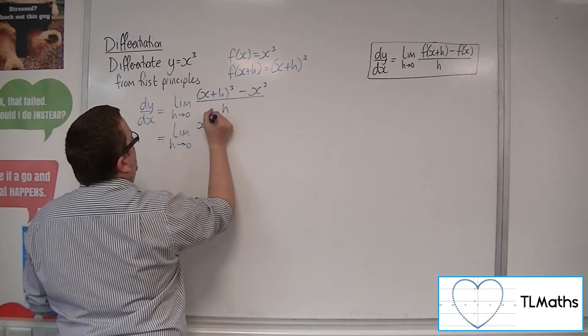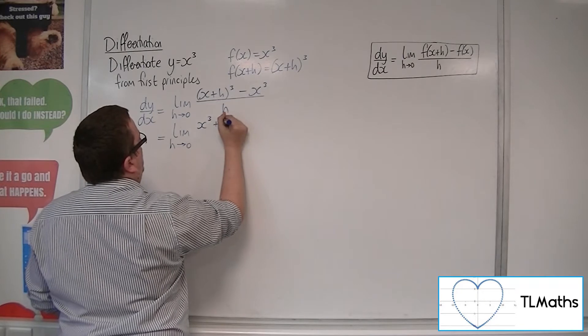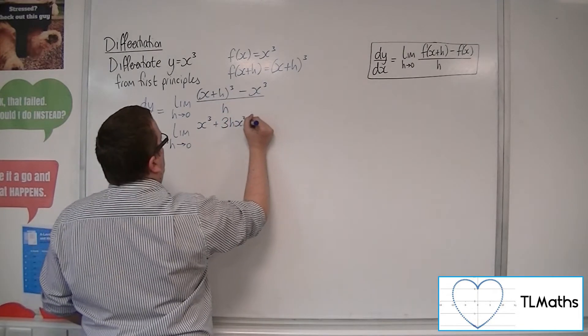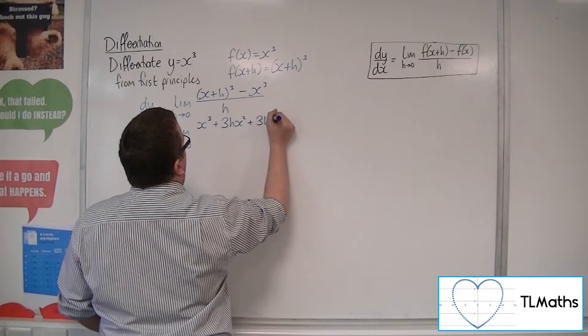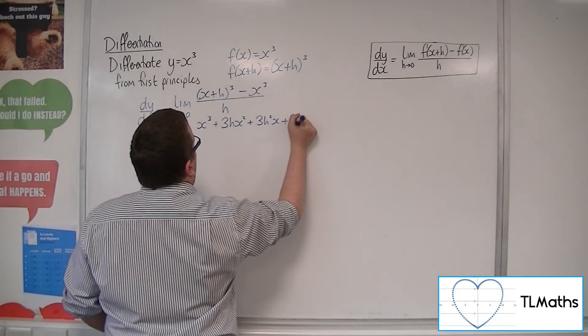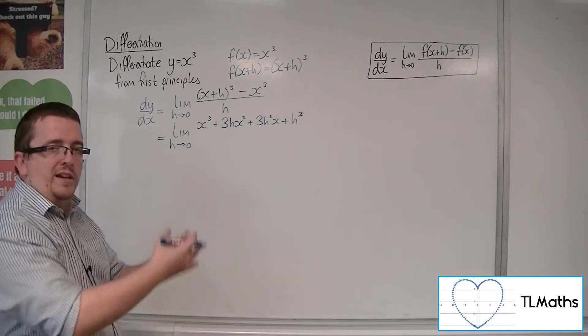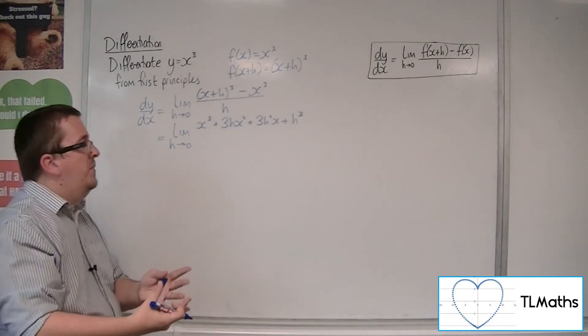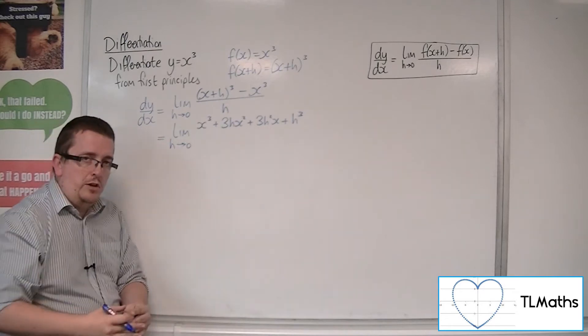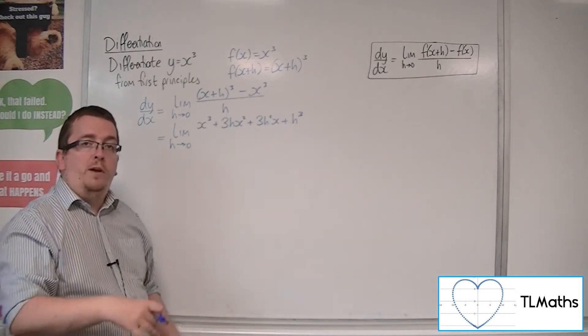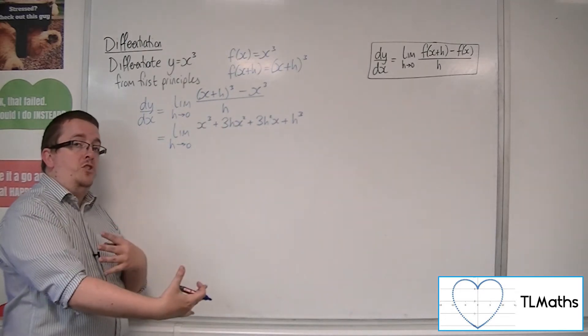We should be able to get x³ + 3hx² + 3h²x + h³. That will be the result once you multiply everything out and collect like terms. If you're not happy about going from there to there, then I would multiply it out bracket by bracket, just to check.